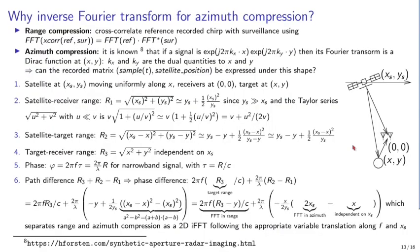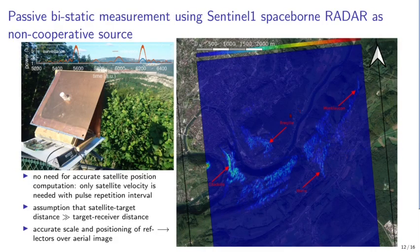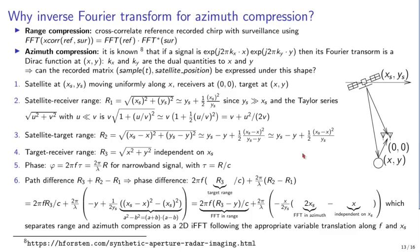To understand how these images are obtained: in the range direction, distance to the target is a correlation between reference and surveillance channels, with the inverse of bandwidth giving range resolution. For azimuth compression — finding location along the satellite's path — it involves an inverse Fourier transform. The model here differs from typical bi-static radar, which has a static emitter with a nearby moving receiver, or both moving along a line.